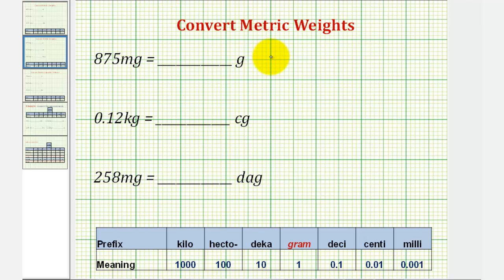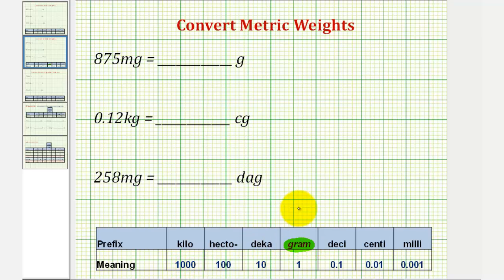Let's first look at our table. Notice the basic unit is the gram. The smallest unit in this table is a milligram, which is equal to one thousandth of a gram. And the largest unit is a kilogram, which is equal to one thousand grams.